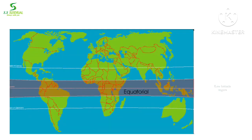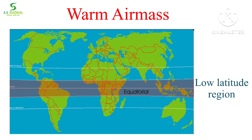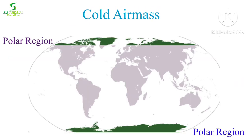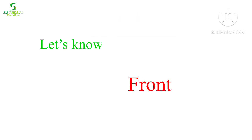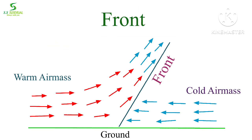On the basis of temperature there are two types of air masses: one is warm air mass and the other is cold air mass. Generally, warm air mass originates in low latitude or tropical regions, and cold air mass originates in higher latitude or polar regions.